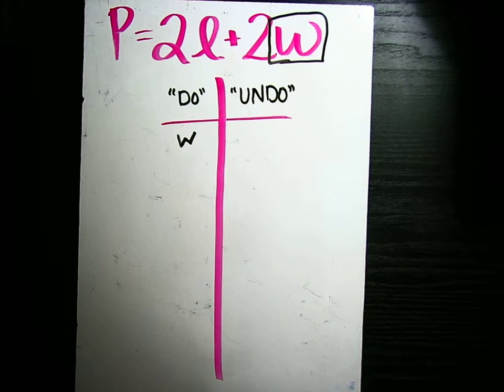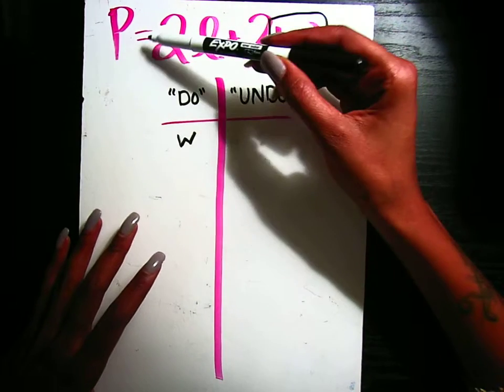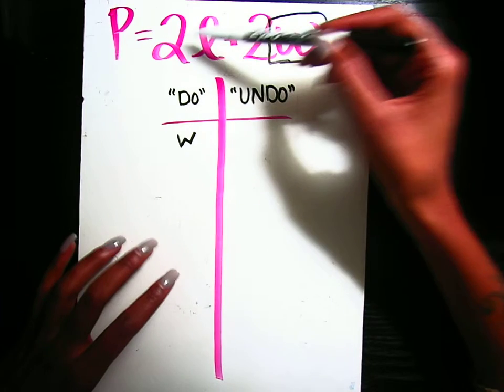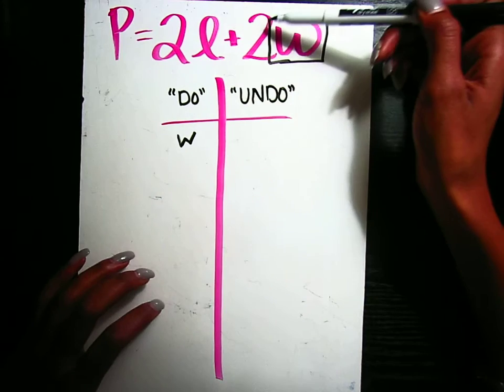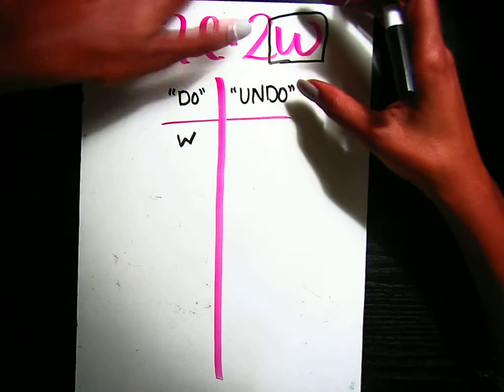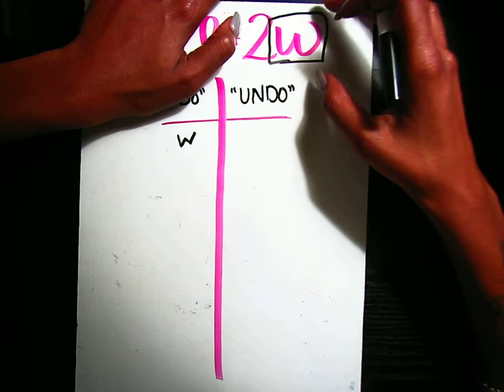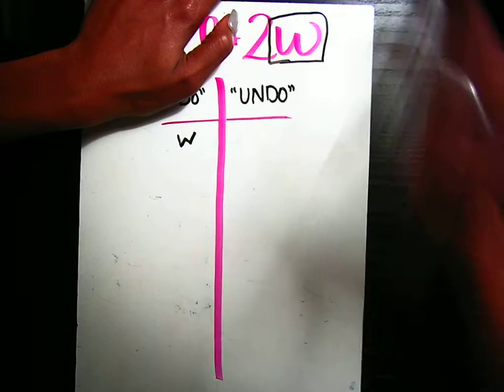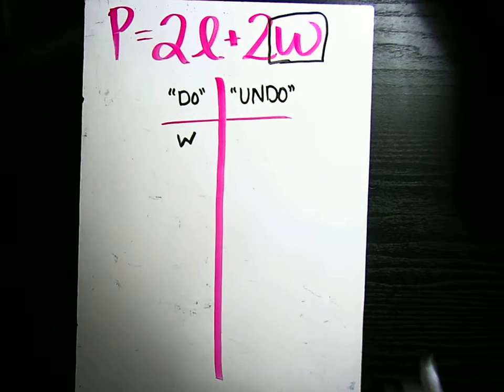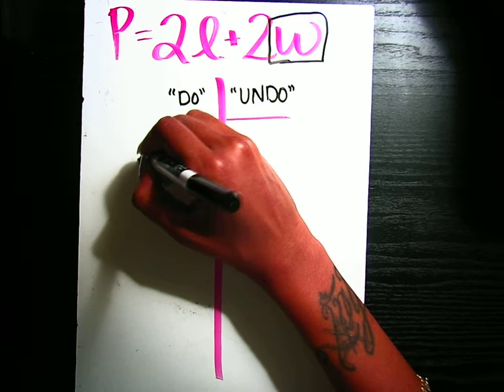Now, what is the very first thing we did to W? How I like to practice this is I like to read it out loud. P is equal to 2 times L plus 2 times W. The last thing that I said is what I need to be writing down. What am I doing directly to W? The first thing that I'm directly doing to W is multiplying it by 2. So I'm going to write times 2.